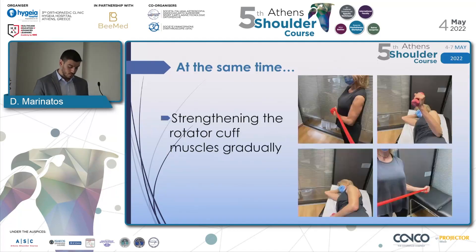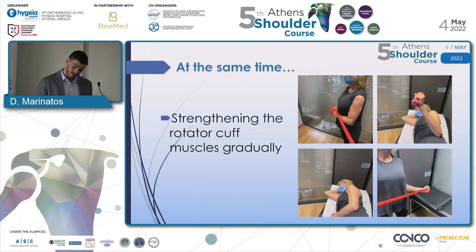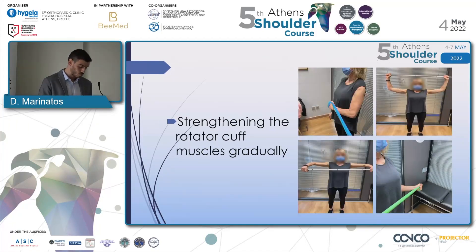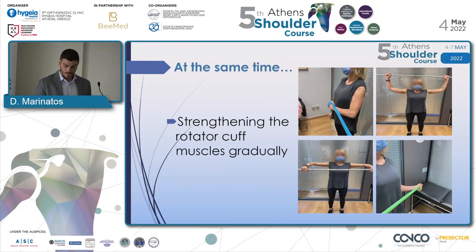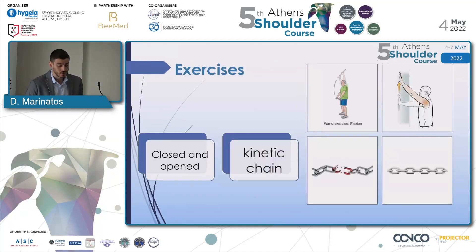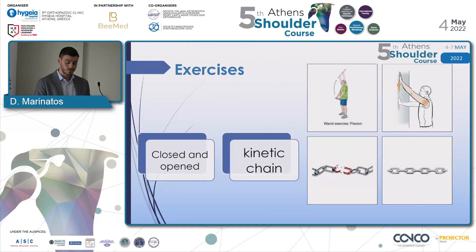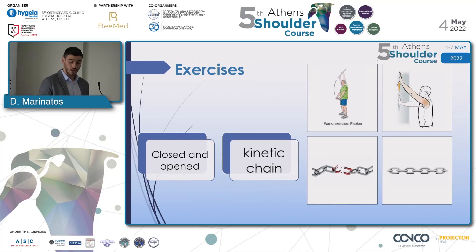We then continued the exercises while she was on her side and followed up with a standing position using resistance bands and weights. Her therapy program included stretching and strengthening exercises to increase her full range of motion, and I also included open and closed kinetic chain exercises when she was able to do them.